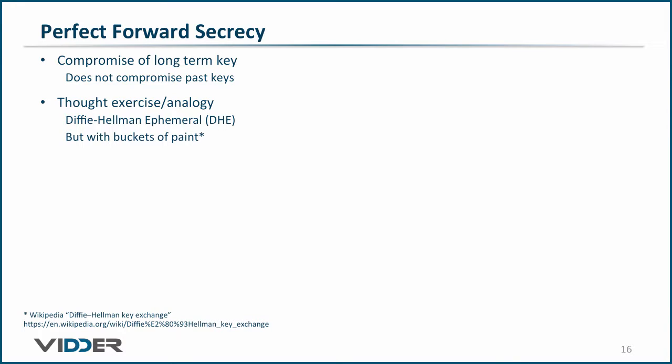The goal of perfect forward secrecy is that the compromise of some entity's long-term key does not compromise past keys. The best way to visualize this is by using an analogy to the Diffie-Hellman ephemeral algorithm, but with buckets of paint instead of numbers.